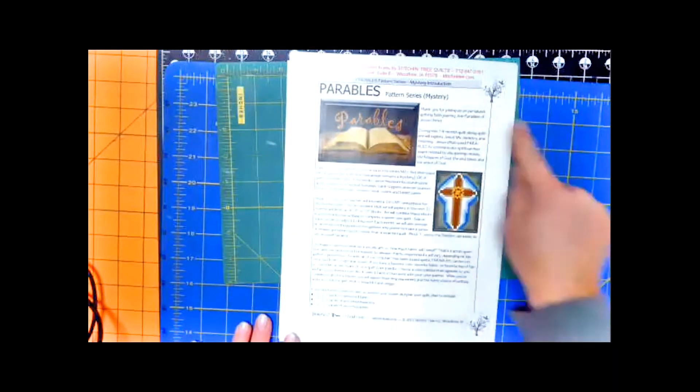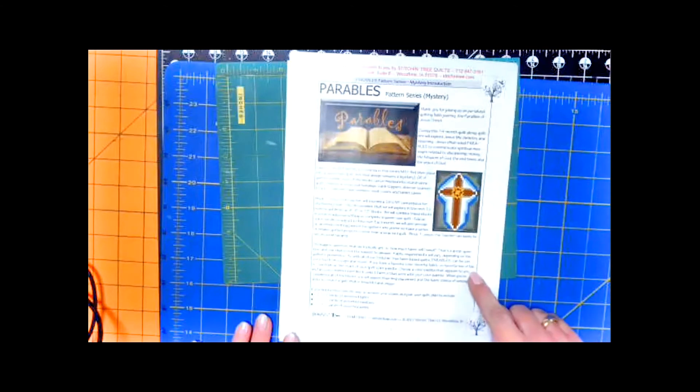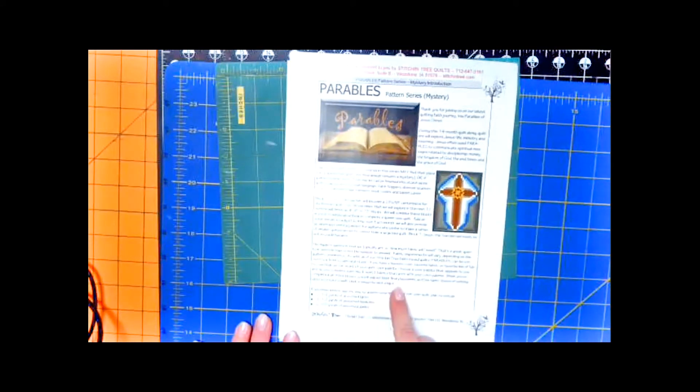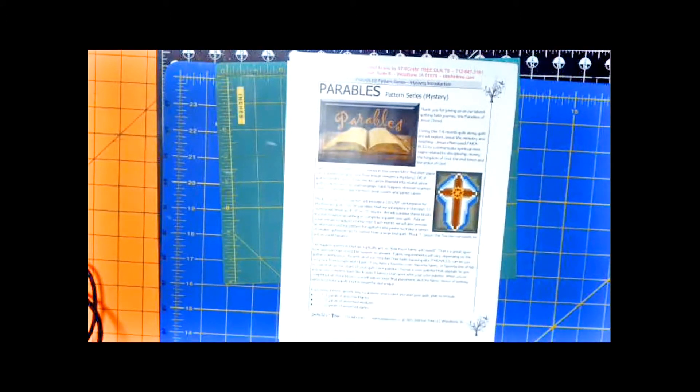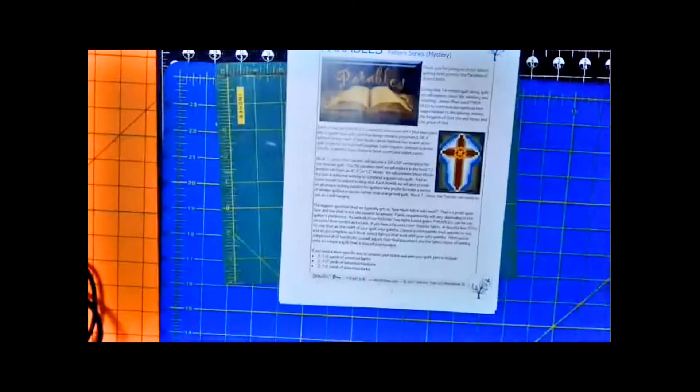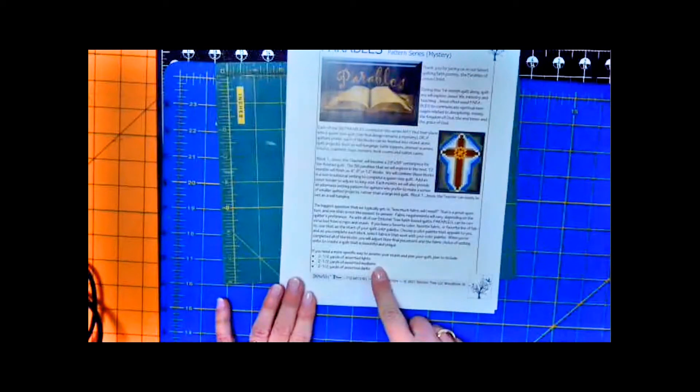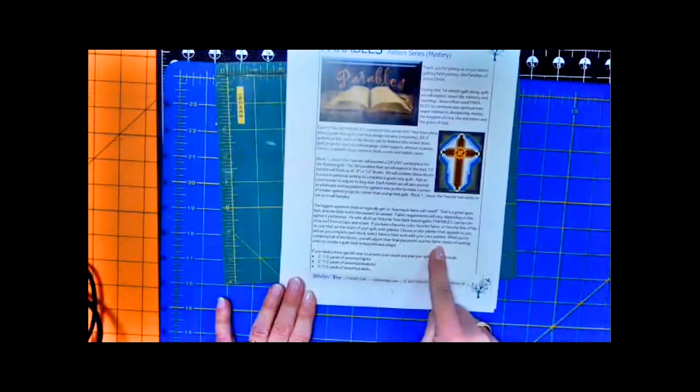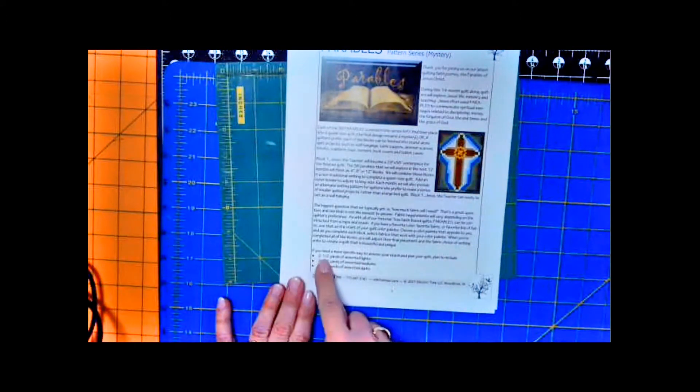The first page is just a thank you for joining, and the best answer I can give you regarding how much fabric you're going to need. As far as the fabric goes, my best guess, and truly this is just a guess, because it depends on each quilter, and the color palette that you choose, and your own preference. But my best guess is that you'll need two and a half yards of assorted lights, two and a half yards of assorted mediums, and two and a half yards of assorted darks.